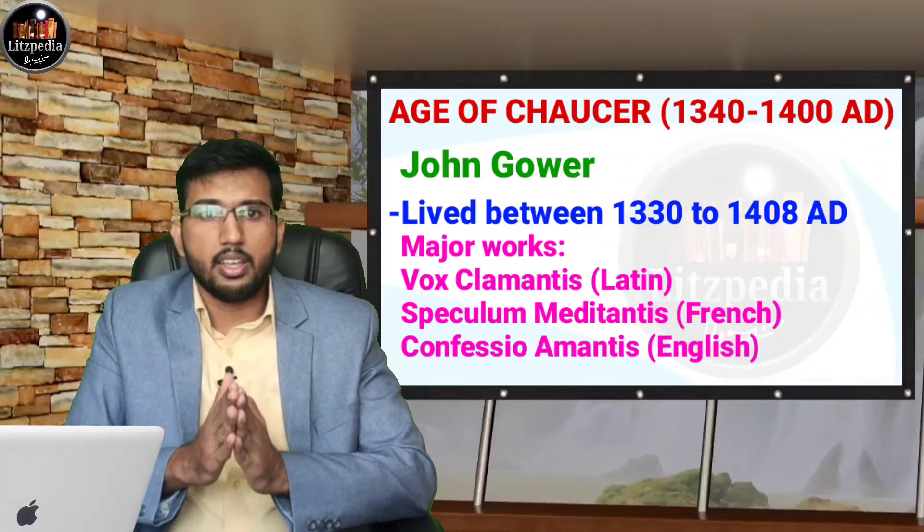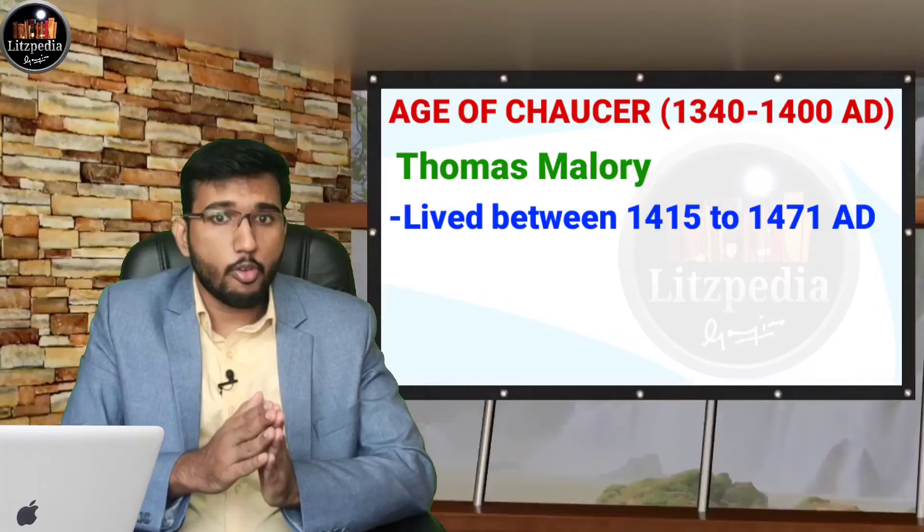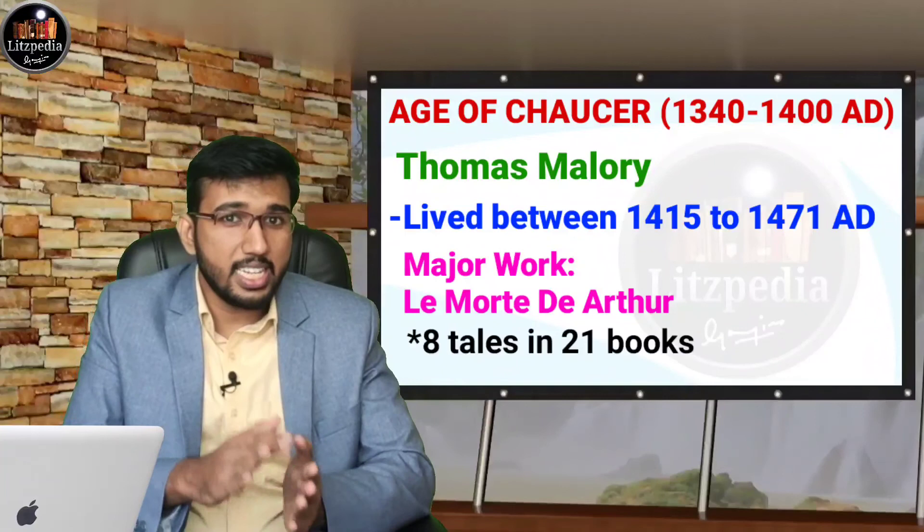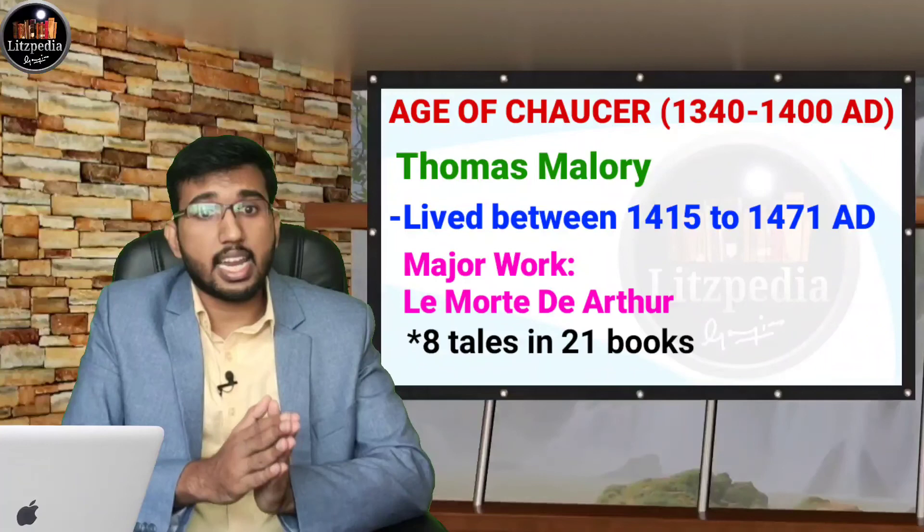Thomas Malory is the next writer, who lived between 1415 and 1471. His important work is Le Morte d'Arthur, which means 'the death of Arthur.' This work consists of 8 tales in 21 books, and it mostly contains translations from French prose romances.